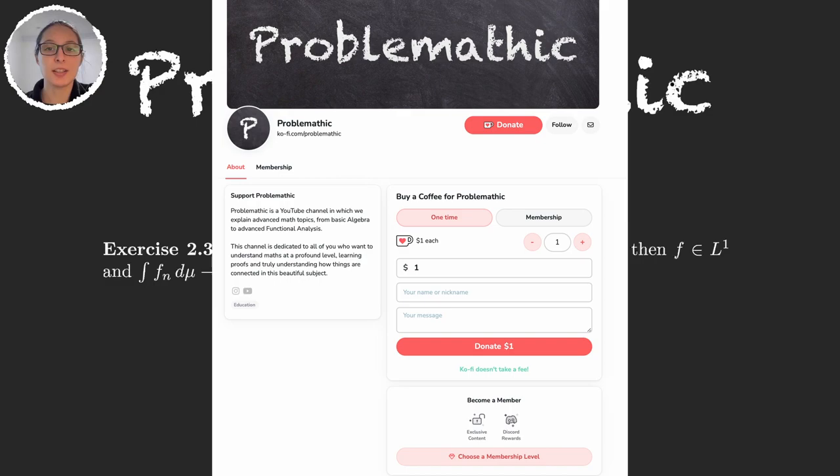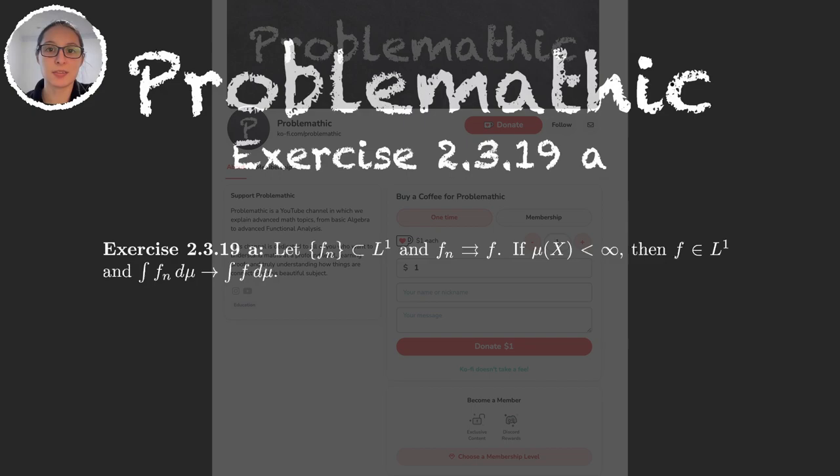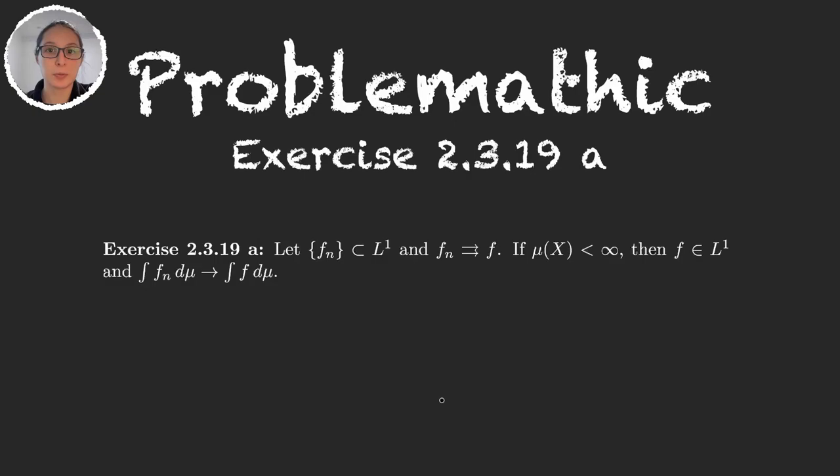Every small donation helps us bring more videos such as this one to the channel. We're going to solve exercise 2.3.19 in section 2.3 of Folland's book, and I'm only going to solve part a because part b is very valuable if you try and think about it yourself.